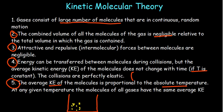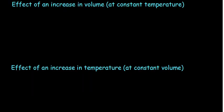The fifth postulate: the average kinetic energy of gas molecules is proportional to the absolute (kelvin) temperature. At any given temperature, the molecules of all gases have the same average kinetic energy. This means temperature is essentially defined as the average kinetic energy of the molecules.